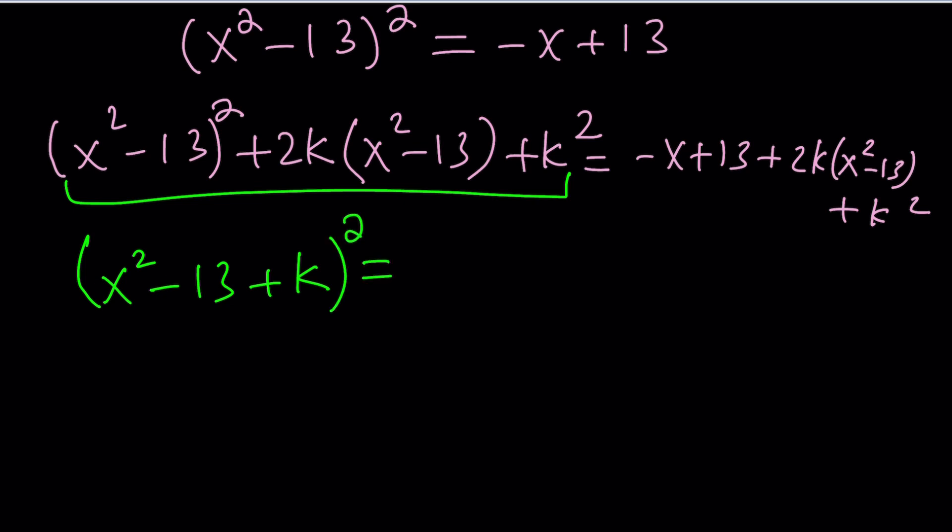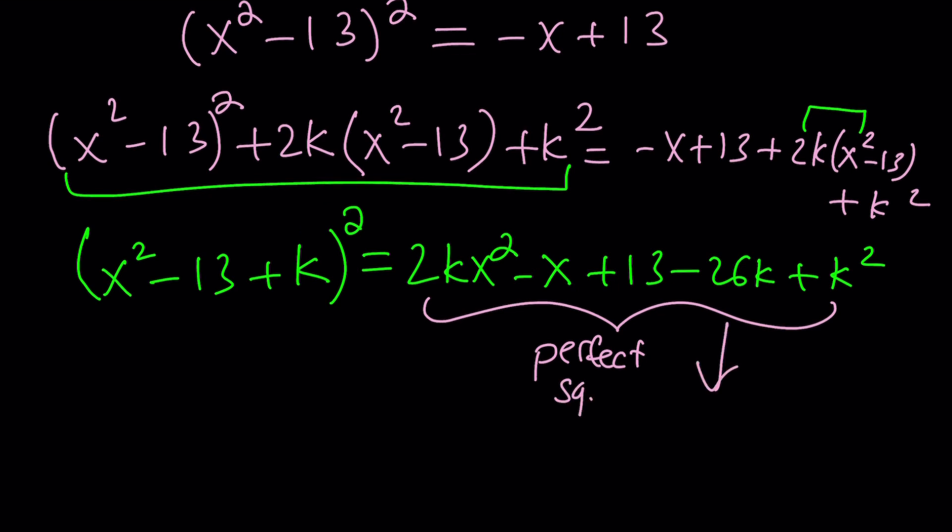Let's go ahead and rearrange the right-hand side. We're going to write the x squared first, so it's going to be 2k x squared. And then we have the minus x. And then we have the 13. And then we have the minus 26k plus k squared. Now, the left-hand side is perfect square, so the right-hand side is also a perfect square. Perfect square means the delta is 0. That's what it means.